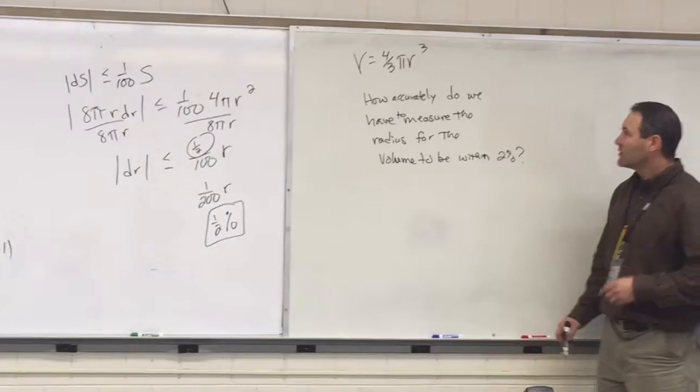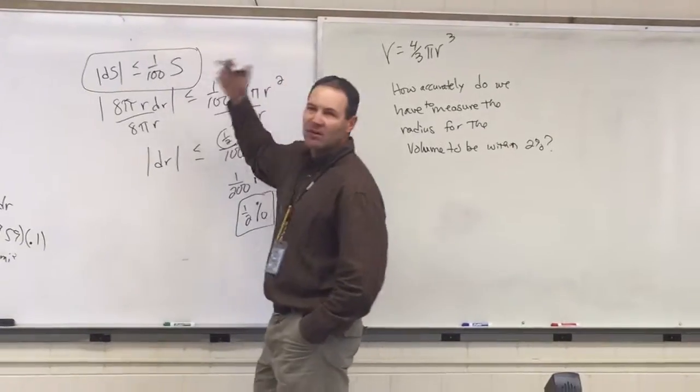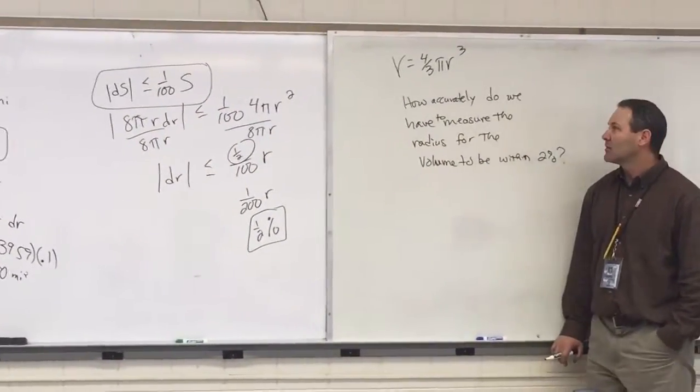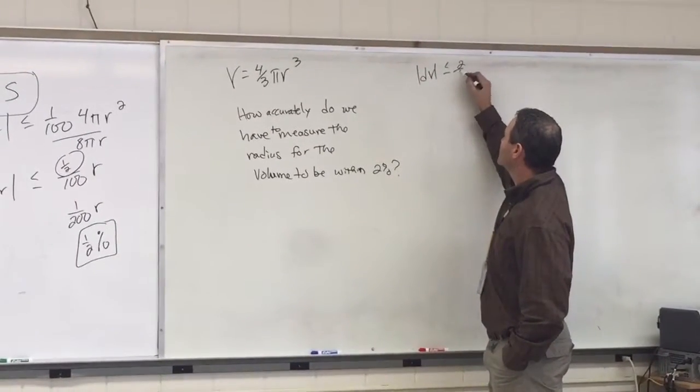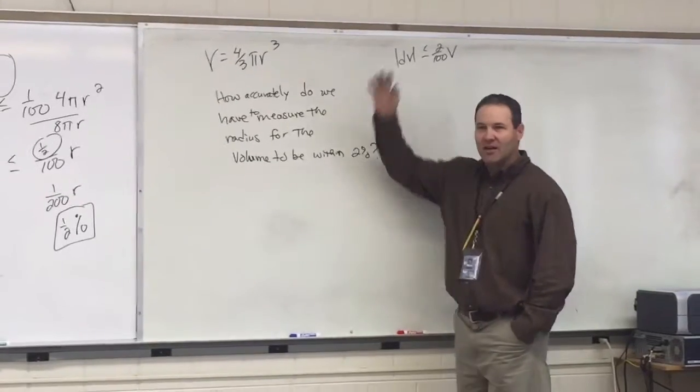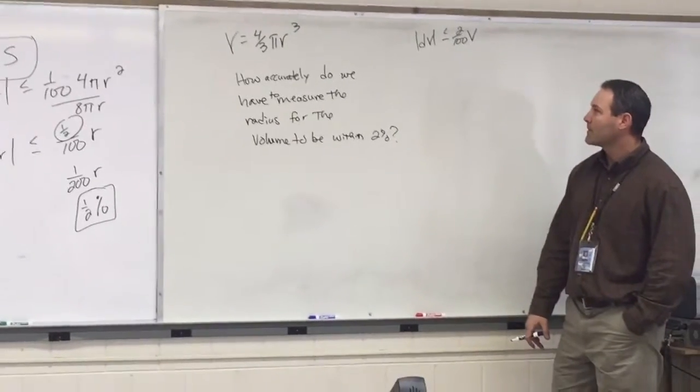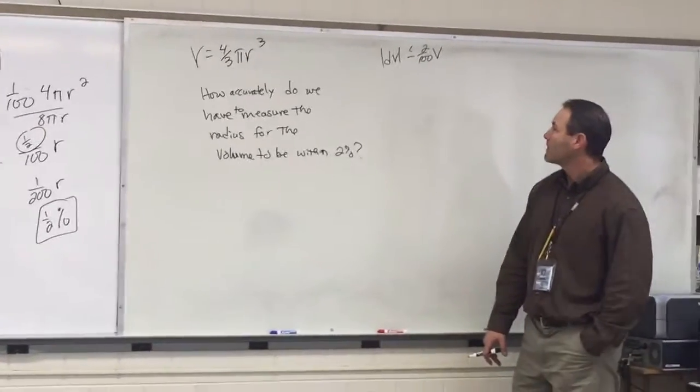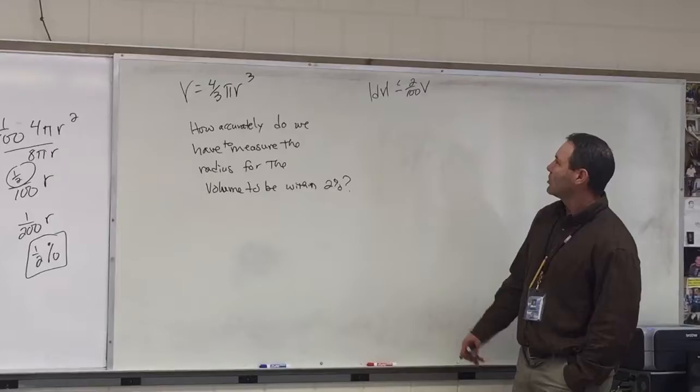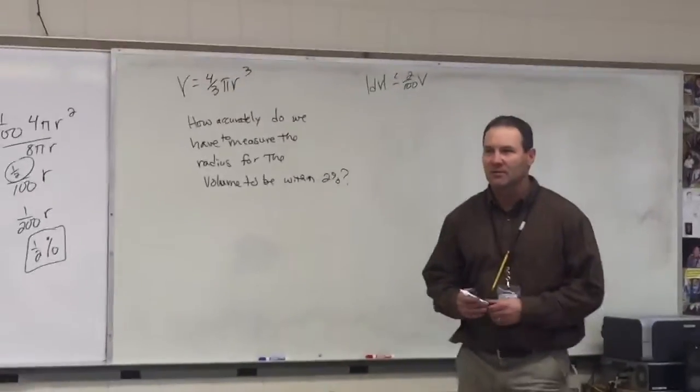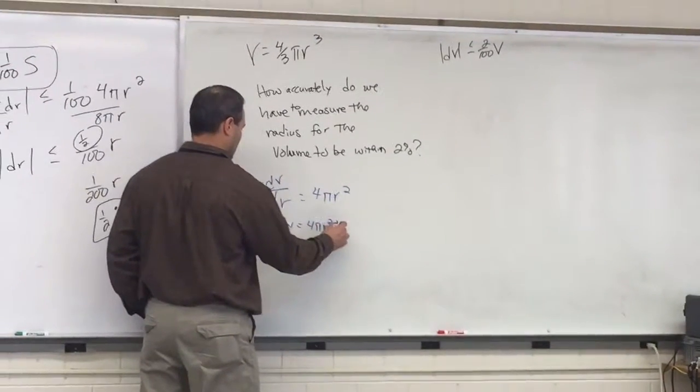Alright, so we're given our formula. But this first step is the most important. So see if you can figure out what we're going to write there. For dV has to be within 2 percent of the actual volume. Anybody have that? Okay, good. We're getting there. Okay, why would you put V there and not R? Because you're finding volume of a half. Okay. Alright, so why don't you try this problem then?